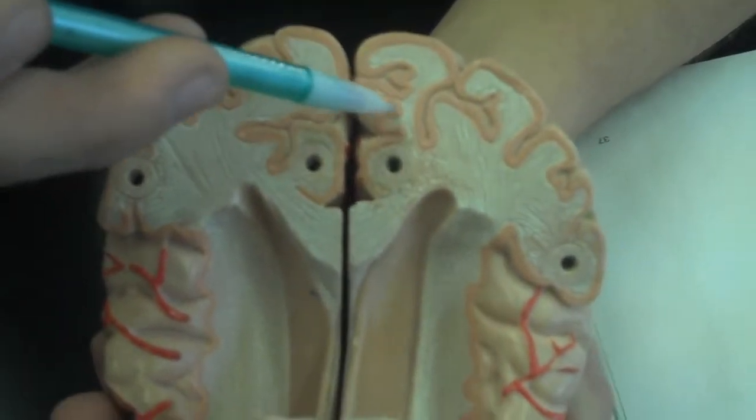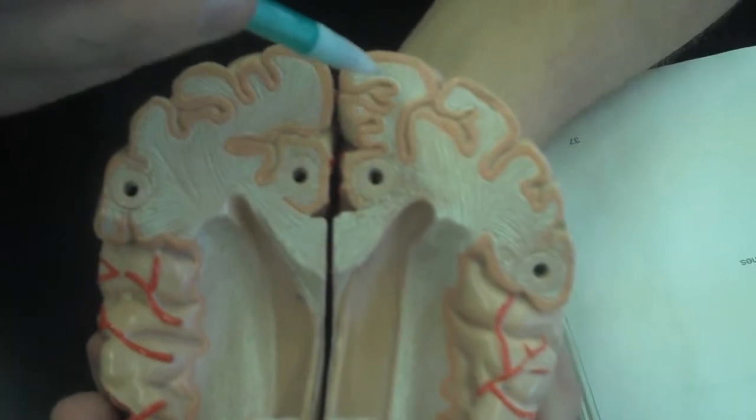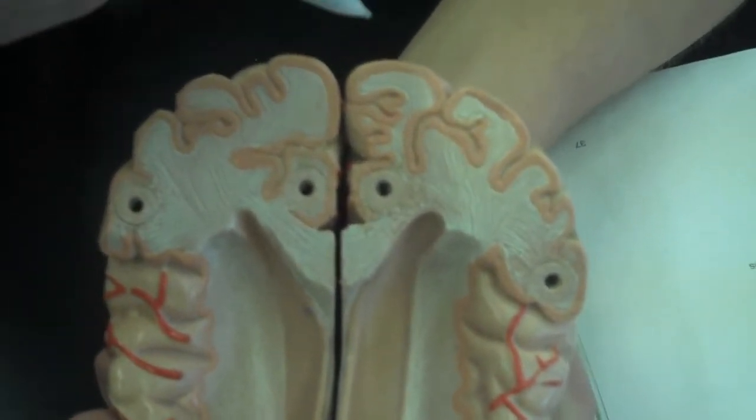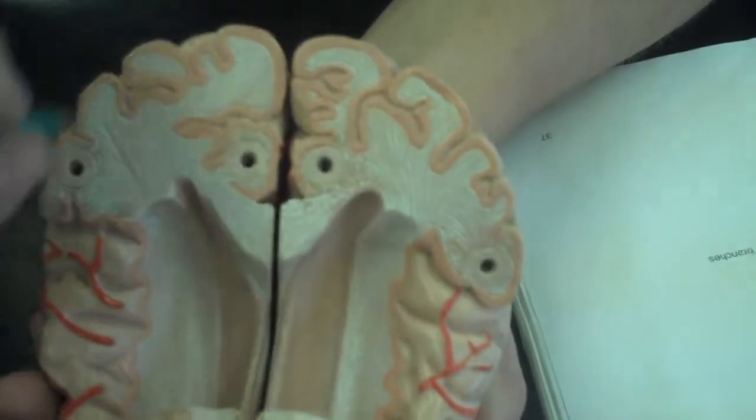All this peach color you see here, all throughout, this is the gray matter of the brain. The cortex of the brain is just the outermost protective layer of the cortex.